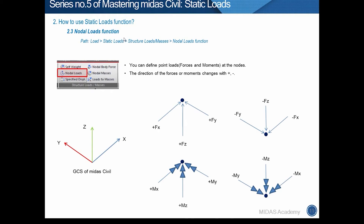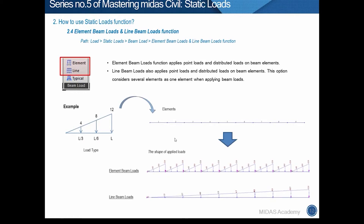Next is the Nodal Load function. This function applies point loads to nodes of elements. Available load types are actual forces and moments, and the direction of loads follows the global coordinate system. These are the element beam load and line beam load functions, which apply point loads and distributed loads to beam elements. It is not possible to apply these functions to truss elements — loads must be applied to nodes of truss elements instead.